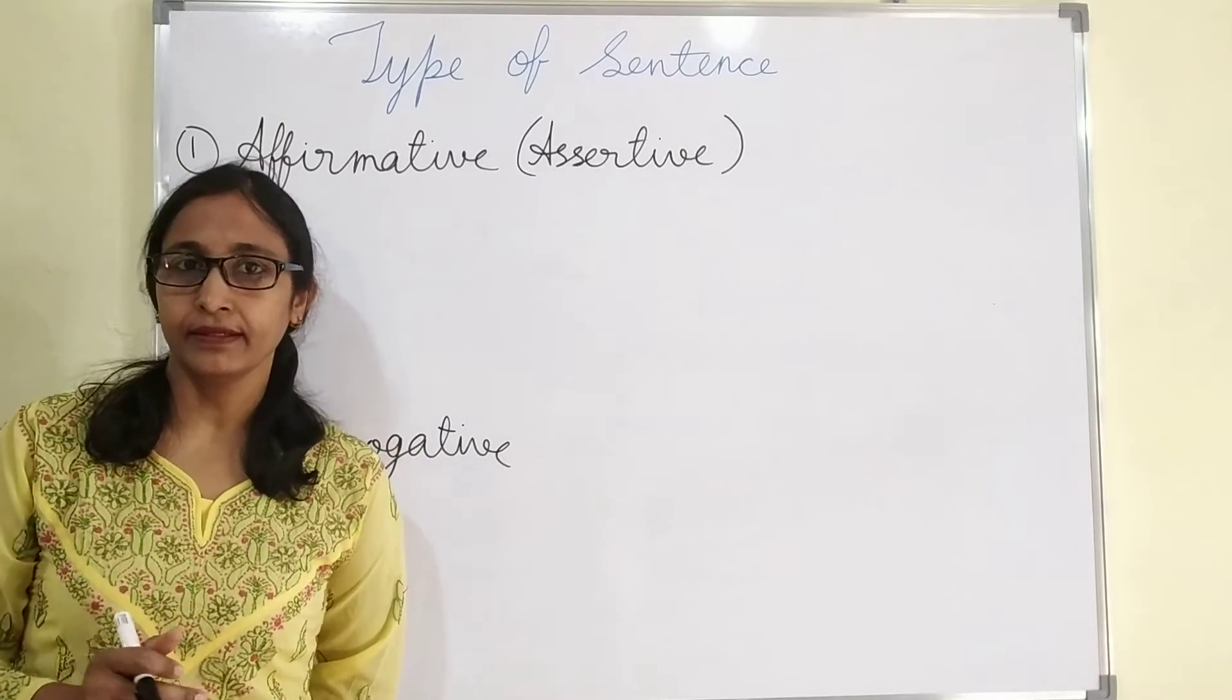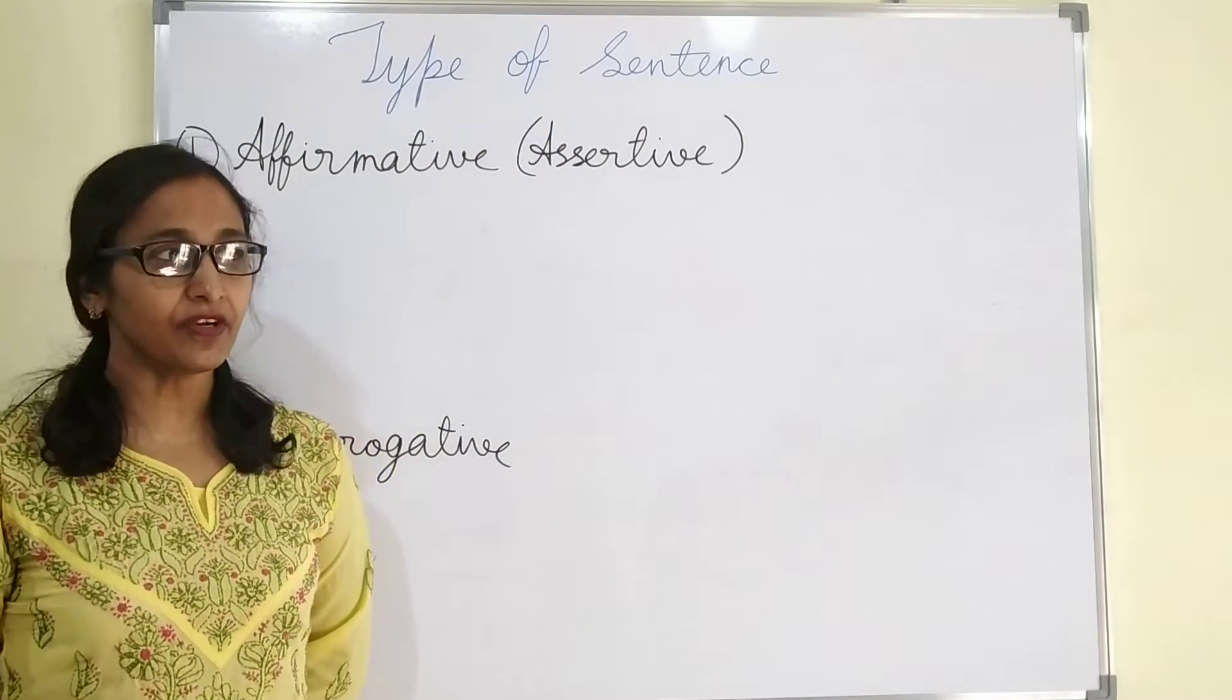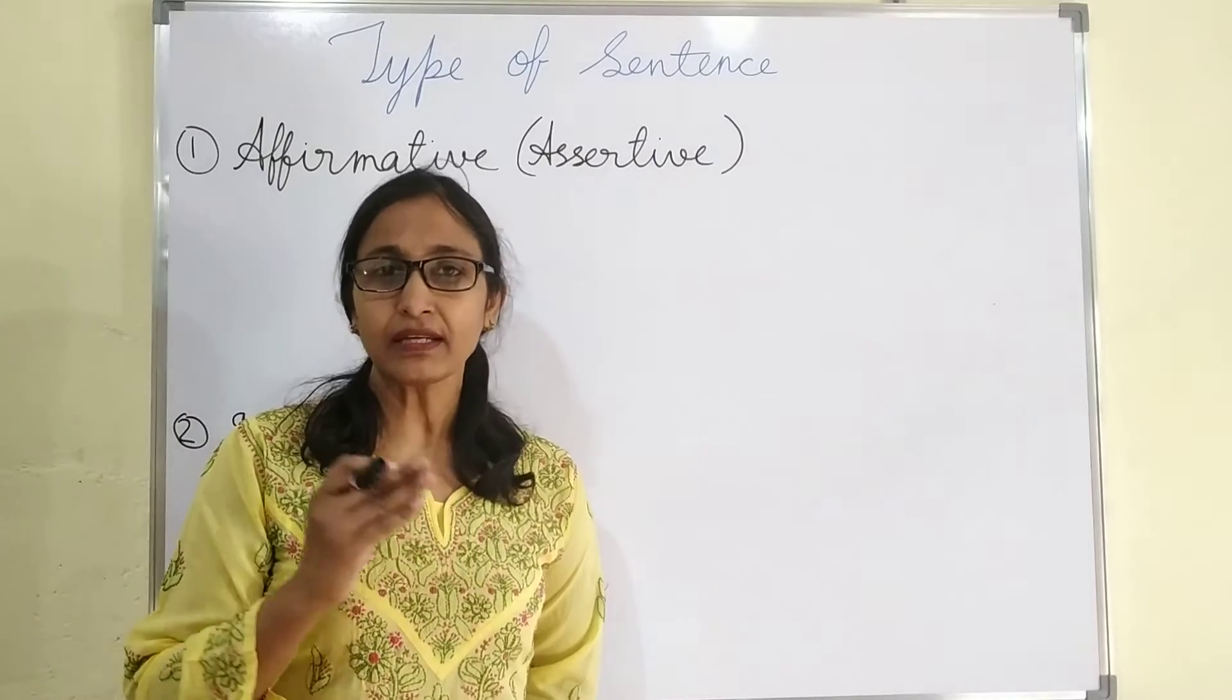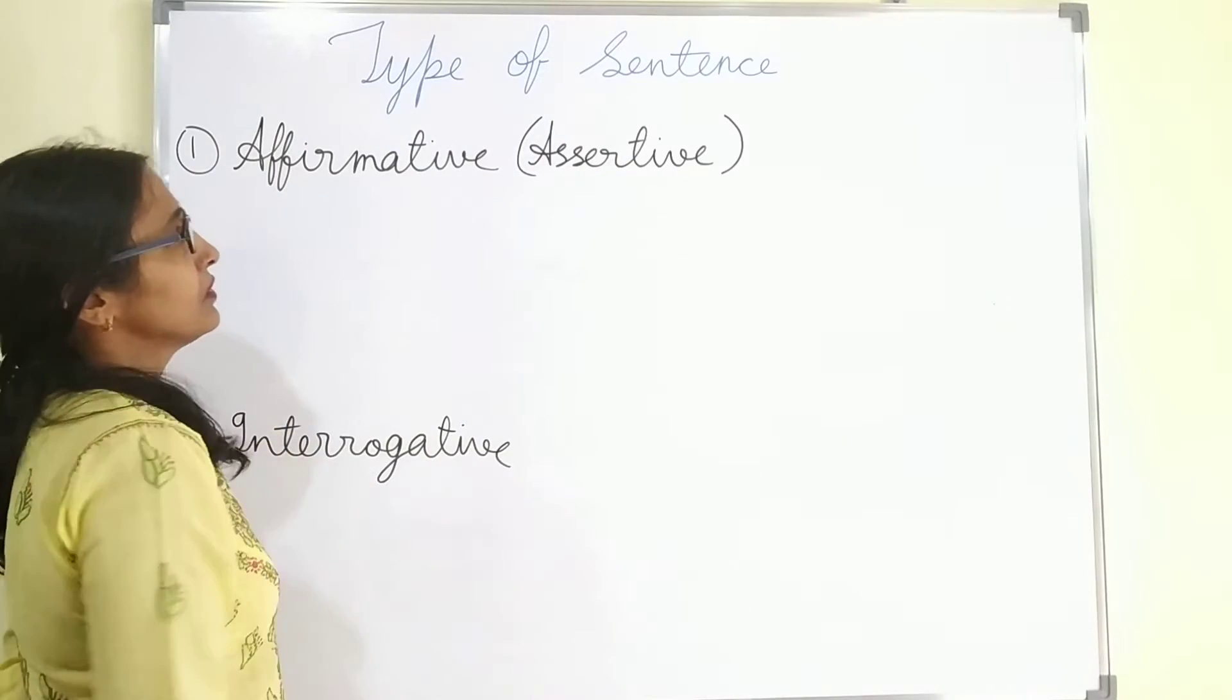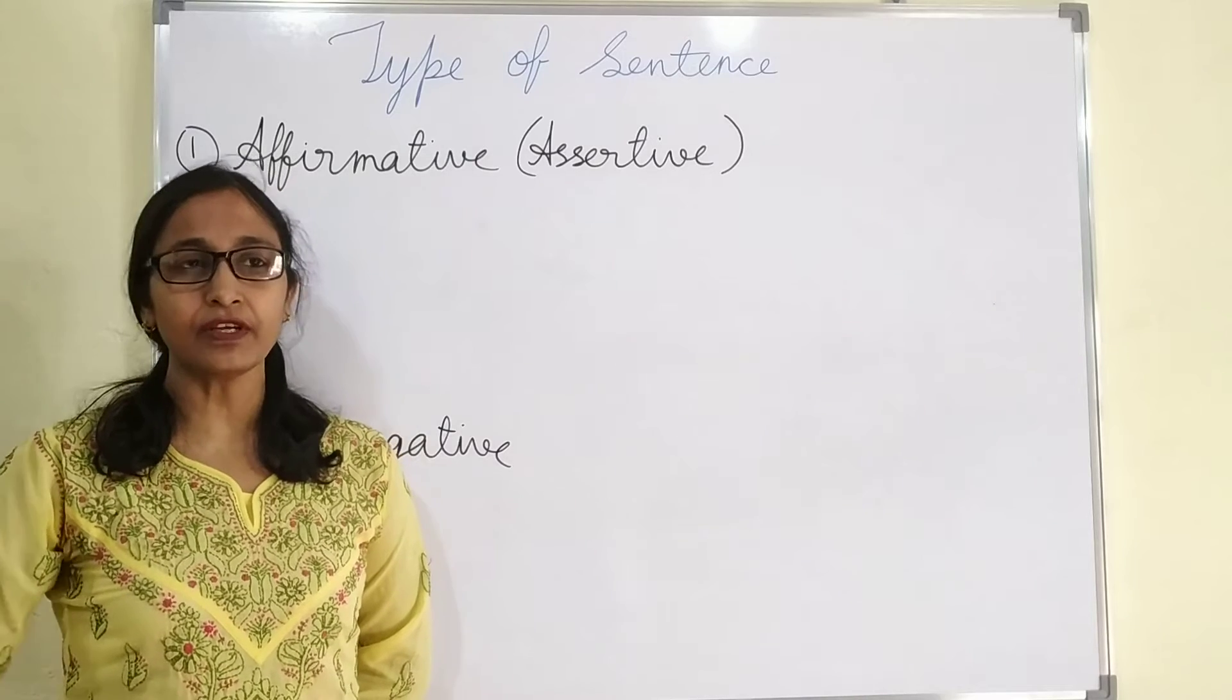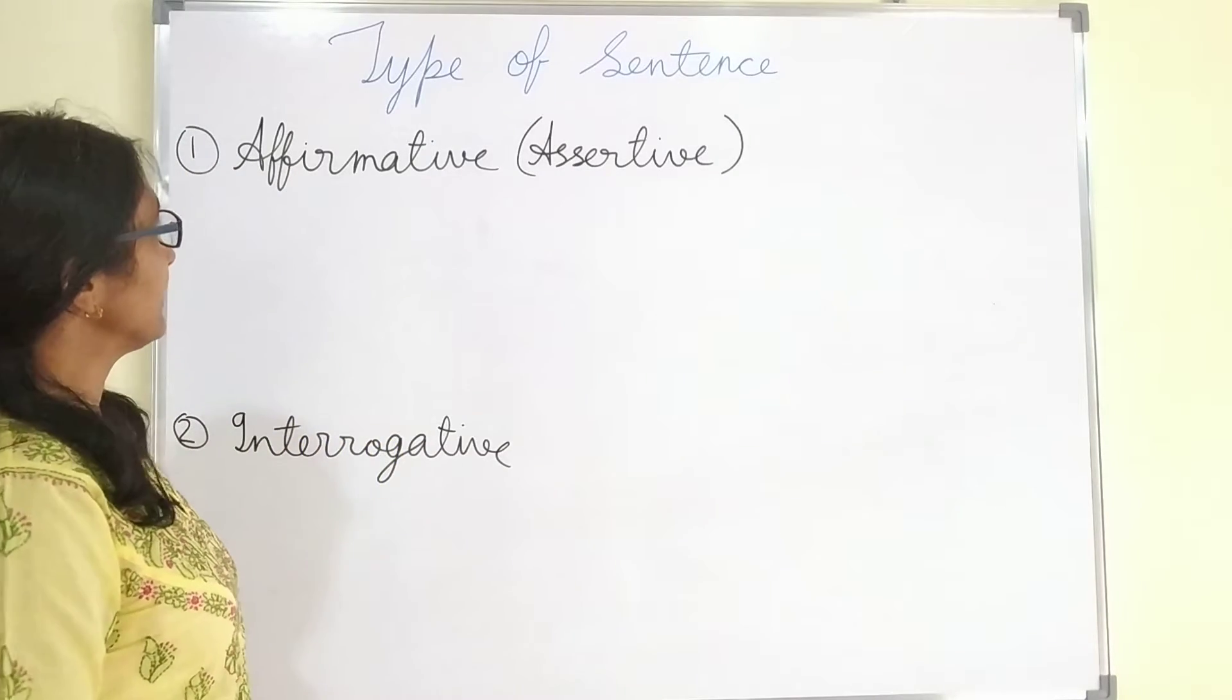Hello kids. In this video, we are going to read about type of sentences. In earlier video, I explained sentence and part of sentence, that was subject and predicate. So, it starts from here. First, what is sentence? Sentence which has complete sense and in which all the words are arranged in meaningful sequence.